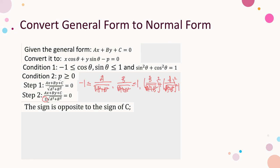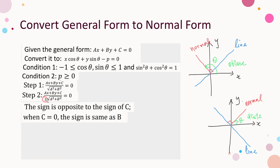When c = 0 — that is, the line passes through the origin — p = 0. In that case, the sign is the same as b, since sin θ is always positive for an acute or obtuse angle.